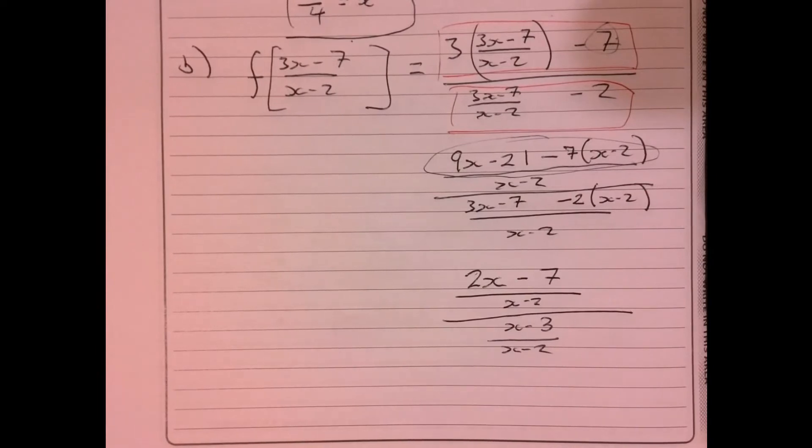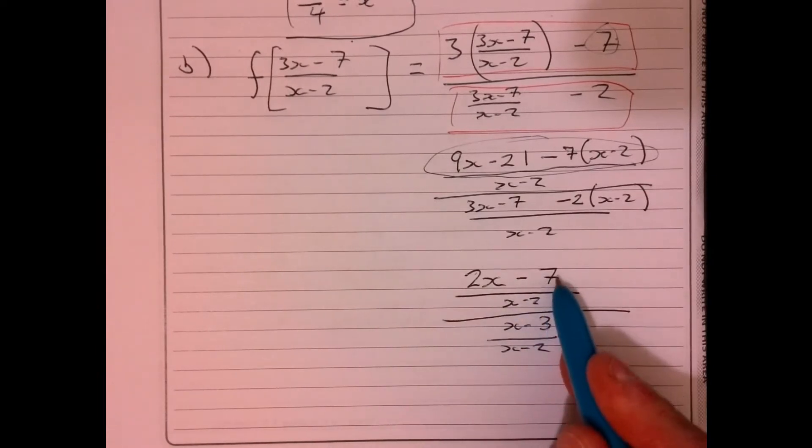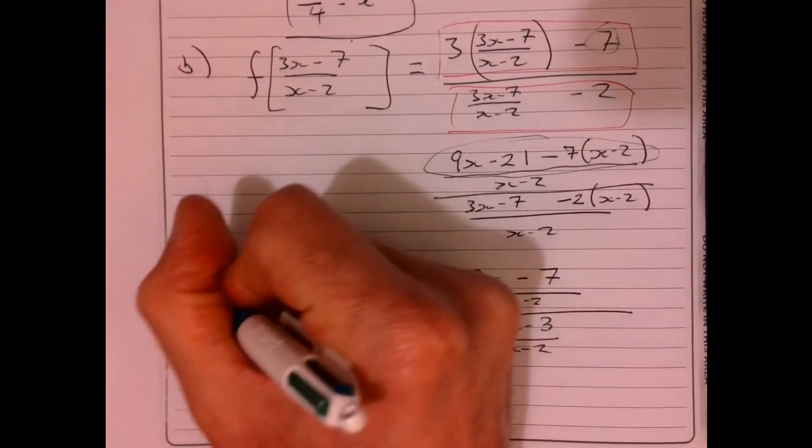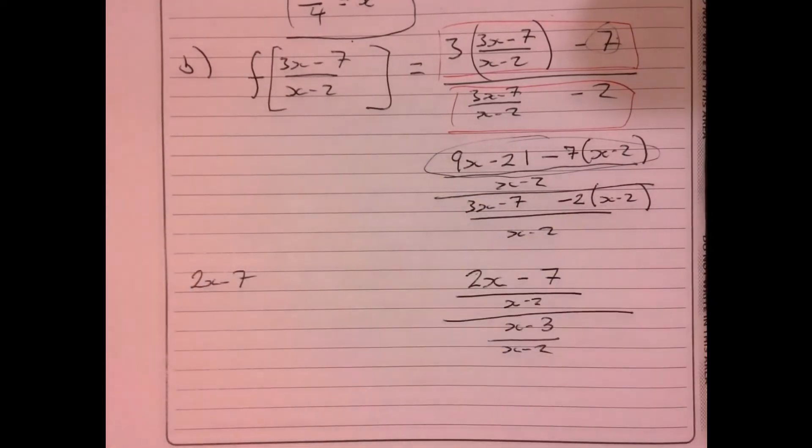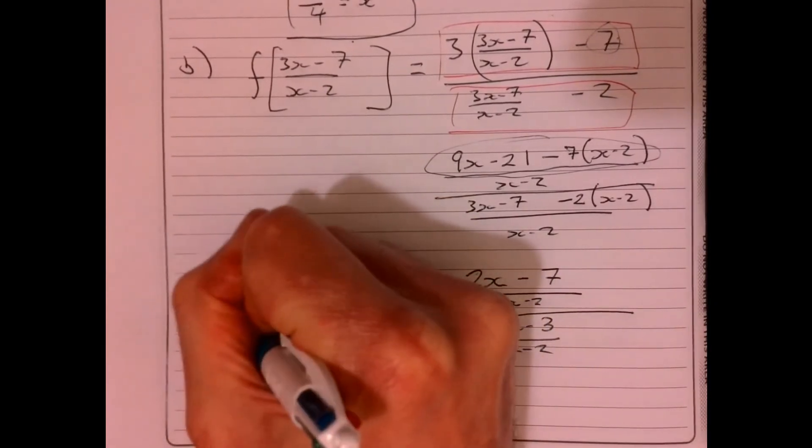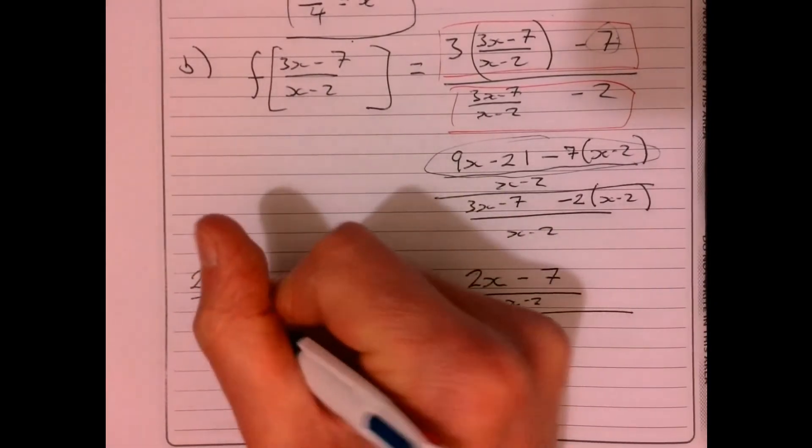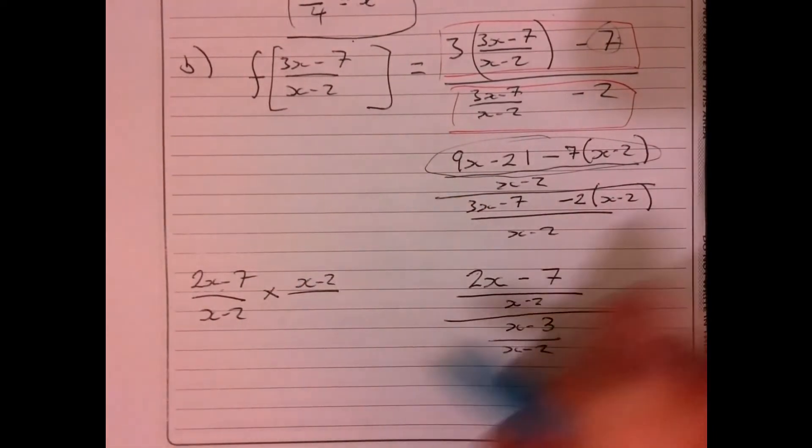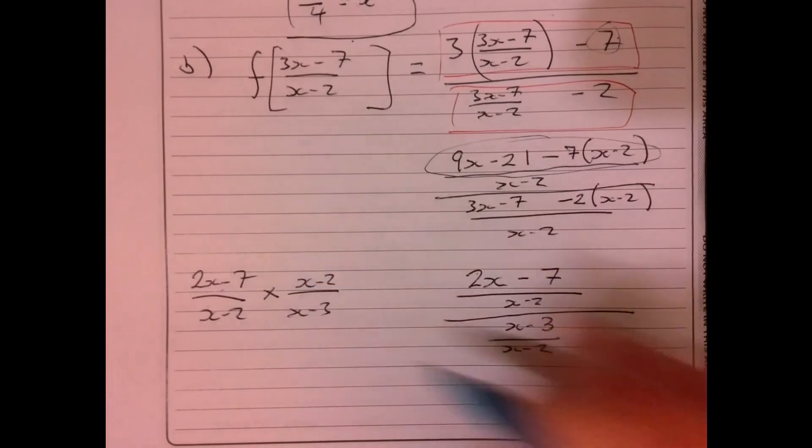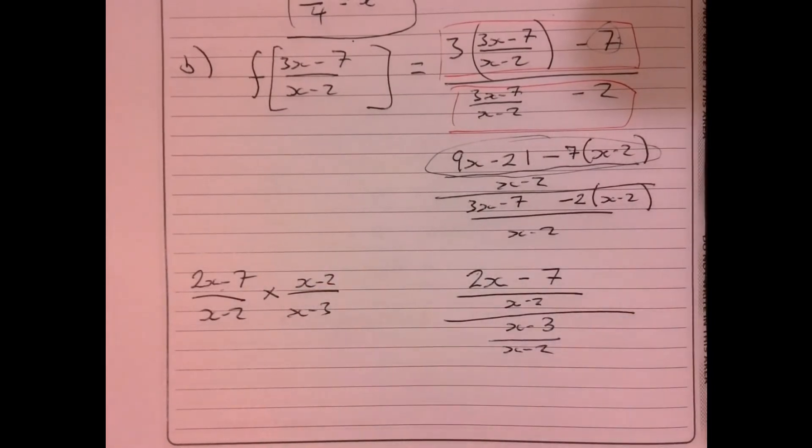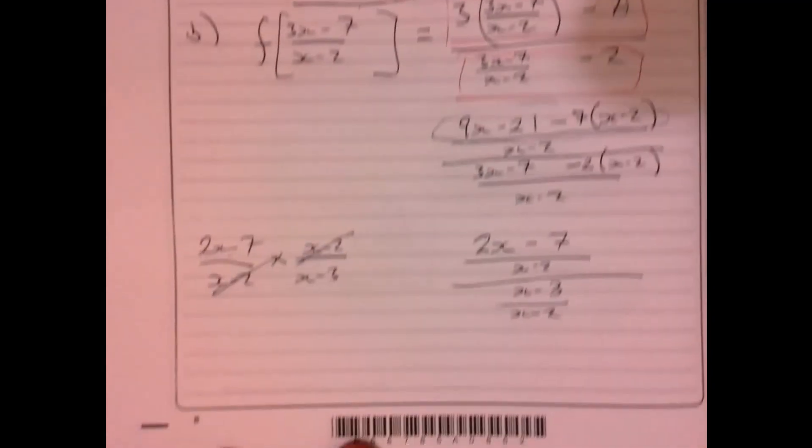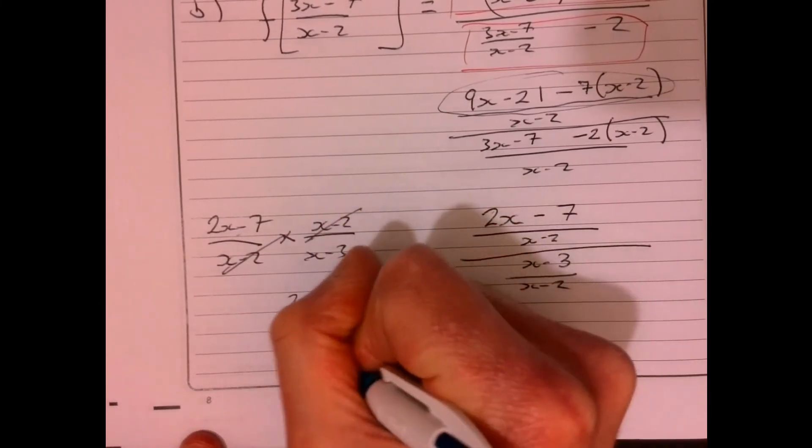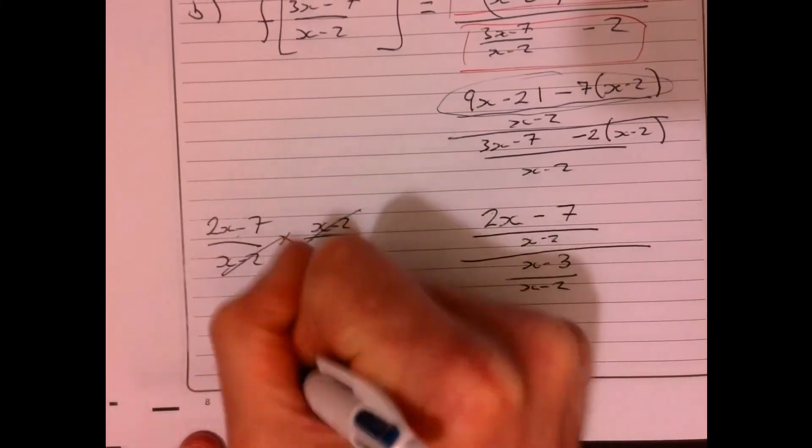But again, if you know how to divide fractions, well, you can sort this out here. Because all you've got is you've got 2x minus 7 over x minus 2. Now, when you divide by a fraction, remember, you keep, you change, and you flip. x minus 2 over x minus 3. I'll just change that around. What's going to happen here? These guys are going to cancel out. So it gives us 2x minus 7 over x minus 3.